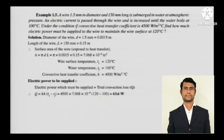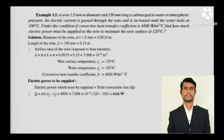The current is increased until the water boils at 100 degree Celsius. Under this condition, if the convective heat transfer coefficient is given, how much electric power must be supplied to the wire to maintain the wire surface at 120 degree Celsius? This is a numerical on Newton's law of convection.